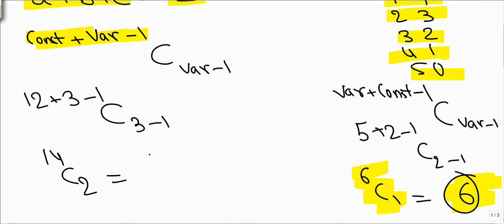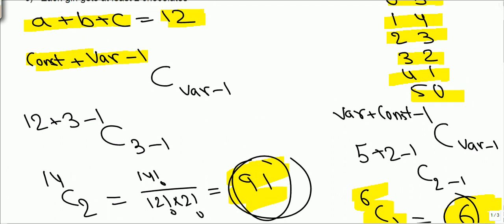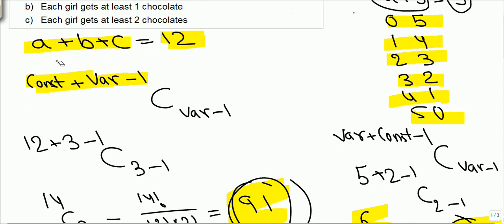So what all we get here is 14 C 2. 14 C 2, you know how to solve it now. 14 factorial upon 12 factorial into 2 factorial. Solve it. The answer is 91 different combinations will be there.